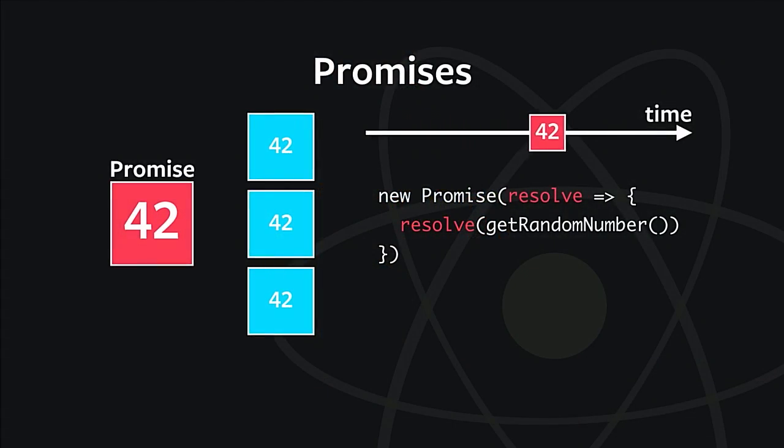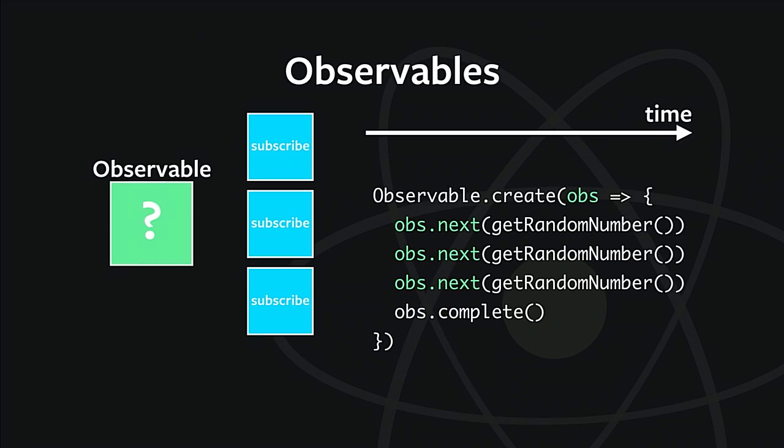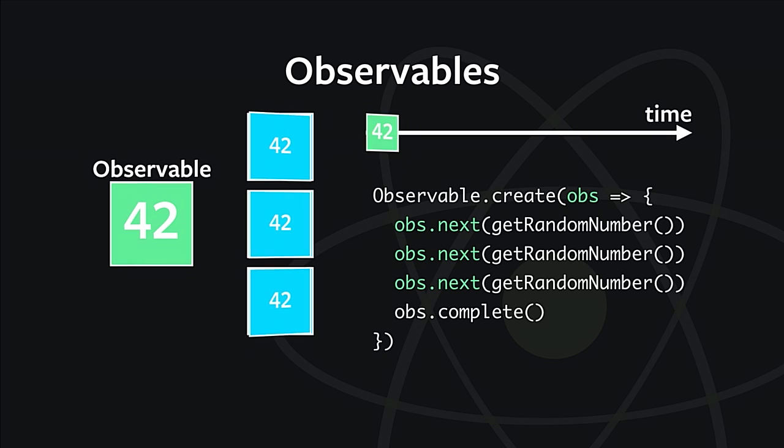And so with a promise, we know that this is a wrapper around a single asynchronous operation. And when it resolves, we can pass that along to all of our subscribers. But we can only ever do this one time. Well, an observable is just a wrapper around an asynchronous stream of values. So you can think of this as an event handler, or a web socket, or a web worker, or something like that. And so rather than just a single value, we pass on many values to all of our subscribers. And then at some point, we say that we're done.